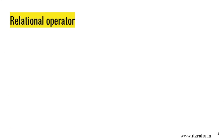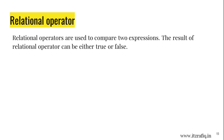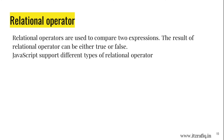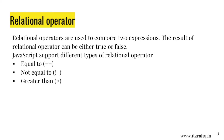Relational operators are used to compare two expressions. The result of a relational operator can be either true or false. JavaScript supports different types of relational operators: equal to (==), not equal to (!=), greater than (>), less than (<), greater than or equal to (>=), and less than or equal to (<=).